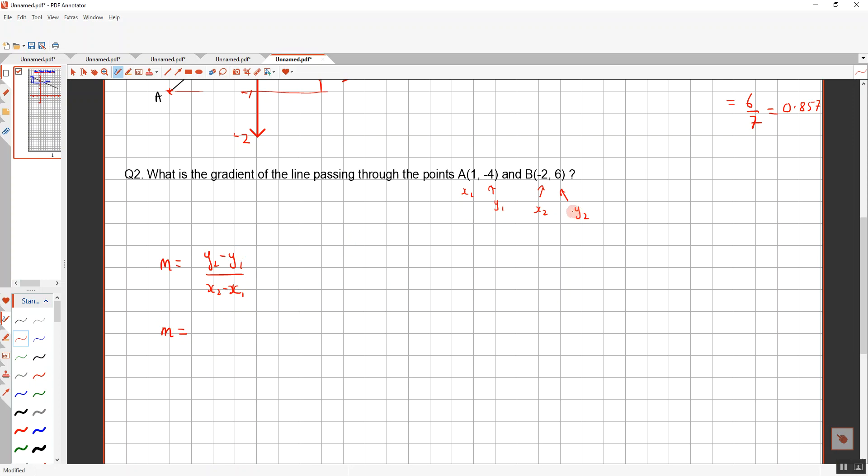So y2 is 6. We're going to subtract y1. So we're going to subtract, what is y1? It is, we're going to subtract negative 4. x2 is negative 2, and we're going to subtract x1, which is 1. We can put the top line into our calculator and we will get 10. Put the bottom line into our calculator and we get negative 3. So our answer is, we can leave it like that. Or if we want to write it as a decimal, negative 3.3 recurring.